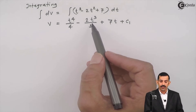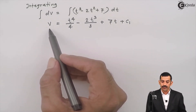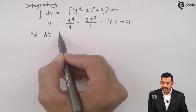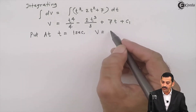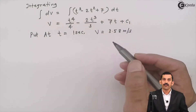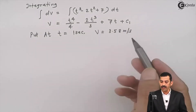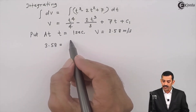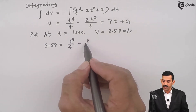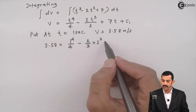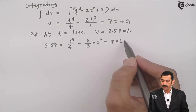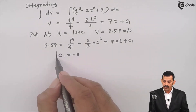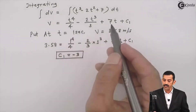The data given is: at t = 1 second, velocity = 3.58 m/s. Substituting this condition — velocity is known, time is known, the unknown becomes C₁. Substituting: 3.58 = 1⁴/4 - (2/3)(1³) + 7(1) + C₁. Using a calculator, C₁ comes out to be -3. Once we get C₁, we have the equation of velocity fully in terms of t.